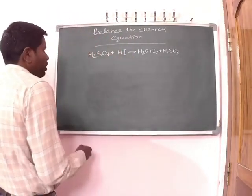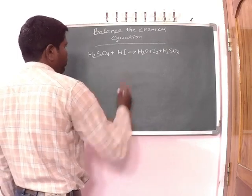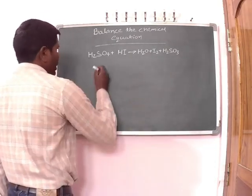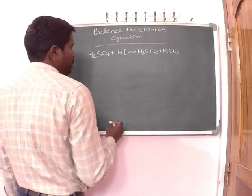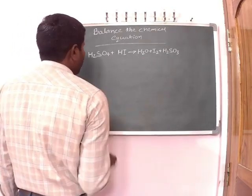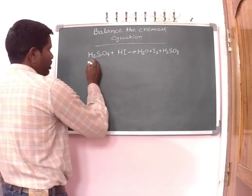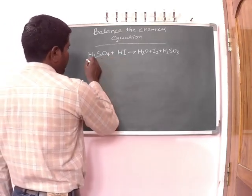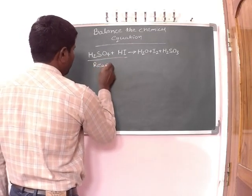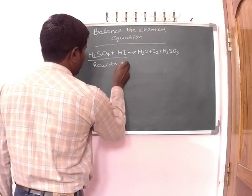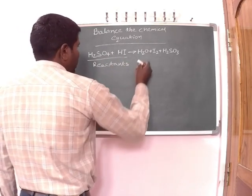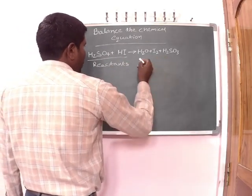In this equation, H2SO4 plus HI gives us H2O plus I2 plus H2SO3. Sulfuric acid plus hydroiodic acid gives us water plus iodine plus sulfurous acid. So in the left hand side, H2SO4 plus HI are reactants. And in the right hand side, H2O plus I2 plus H2SO3 are products.